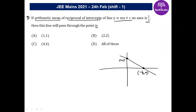If the intercept is c, its reciprocal will be 1/c. And if the x-intercept is −c/m, its reciprocal will be −m/c. So their arithmetic mean will be (1/c − m/c) divided by 2.